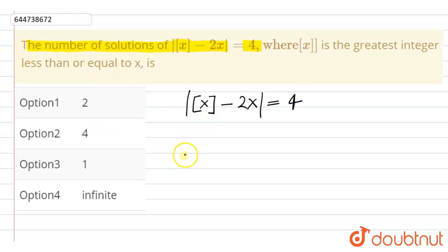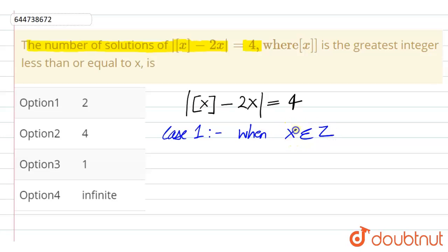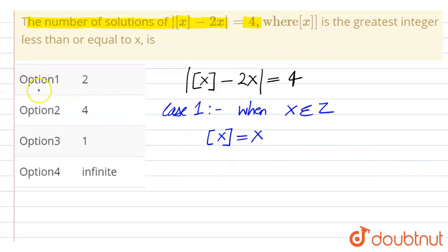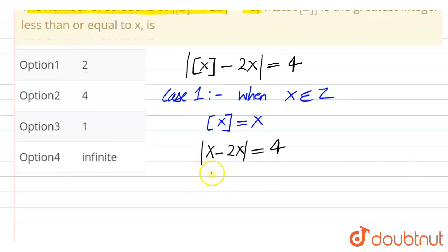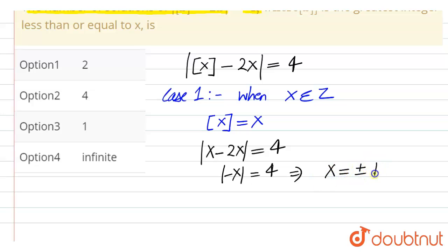Let us take Case 1: when x is an integer. When x belongs to integers, greatest integer of x would be equal to x. So this becomes mod of x minus 2x is equal to 4, which becomes mod of minus x is equal to 4. So the possible values of x from here are x can be plus or minus 4.